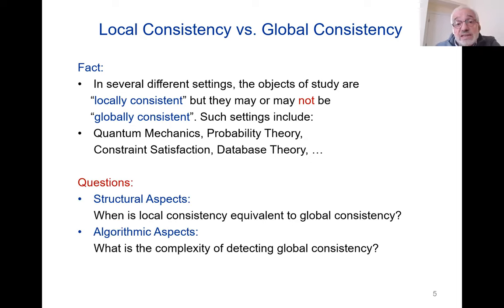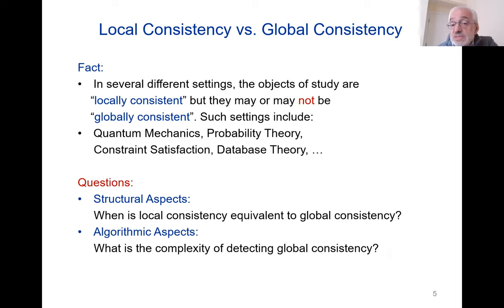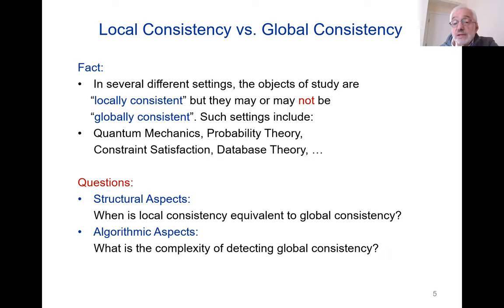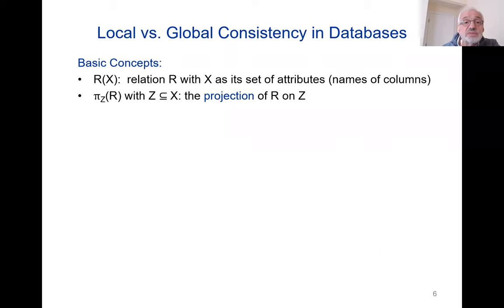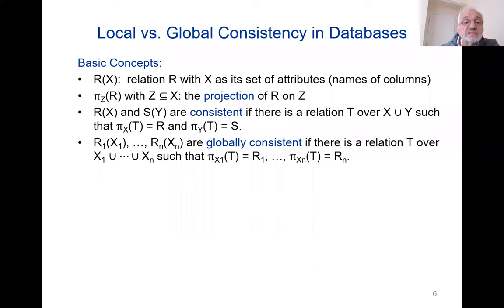When you study the interplay between local and global consistency, there are two fundamental questions that arise. One is a structural question: what are the sufficient and necessary conditions for local consistency to be equivalent to global consistency? The second is an algorithmic question: how difficult is it to detect that the state of affairs is globally consistent? With this in mind, I want to pass to databases and discuss some basic terminology and notation.